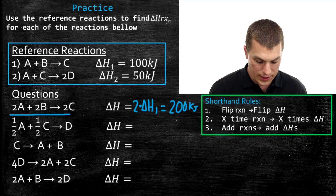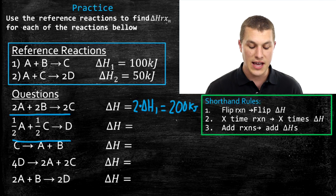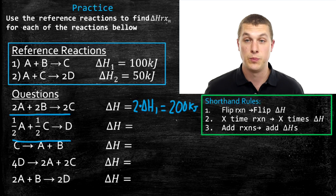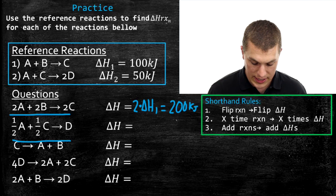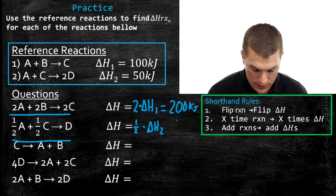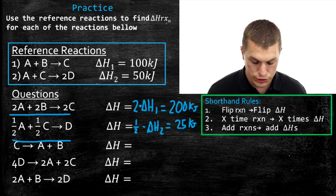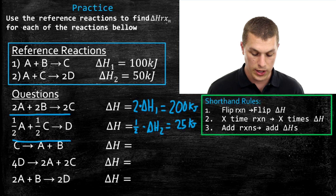Next: one half A plus one half C goes to D. That's exactly the same as reaction two — A plus C goes to 2D — except divided by two, so we've multiplied by one half. By rule two, we do one half times delta H2, and that gives us 25 kilojoules. We multiplied our reaction by one half, so we multiply our enthalpy by one half.